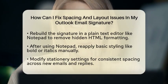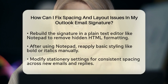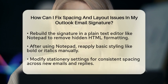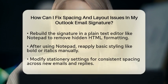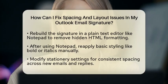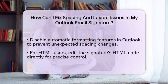Another useful tip is to modify your stationery settings. You can create a custom stationery template by going to File, then Options, followed by Mail, and finally Stationery and Fonts. Set your signature within this template to ensure consistent spacing across all new emails and replies.